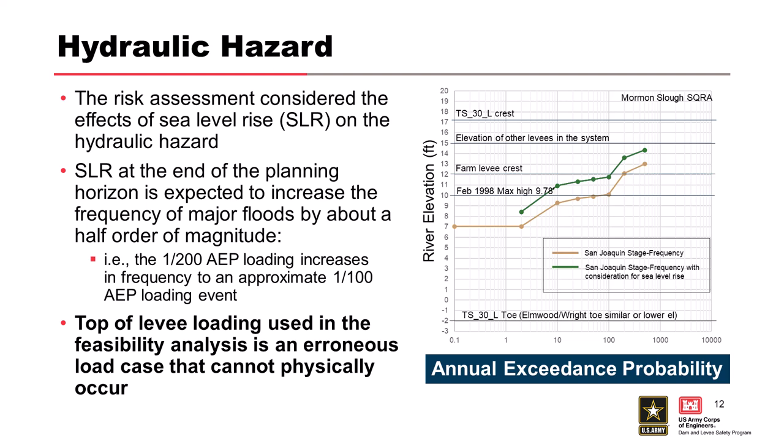Sea level rise also plays into this risk-informed decision making. The stage frequency curve shows annual exceedance probability versus river elevation, with the gray line as our best estimate through a 500-year event. The first issue: the design used a top-of-levee load condition to check downstream gradients, but when we look at the system, all other levees in the system sit at about elevation 15 — some even lower — while TS-30L sits at 17.